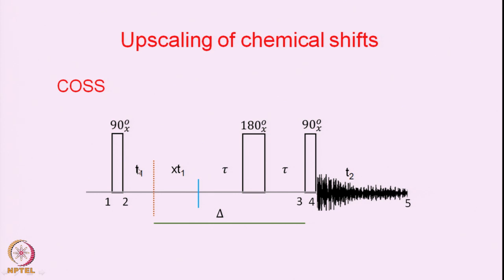We start with the 90x pulse again and here we have the T1 evolution period. Now we have an extended T1 evolution period, called XT1, and then from this point onwards there is the so-called spin echo sequence — tau, 180, tau. We also keep this period constant, and that period is delta. So as you increase this period, the tau values will decrease, and therefore this 180-degree pulse keeps moving along with the T1 increments. The net result is that the time period from here to here remains constant at delta.